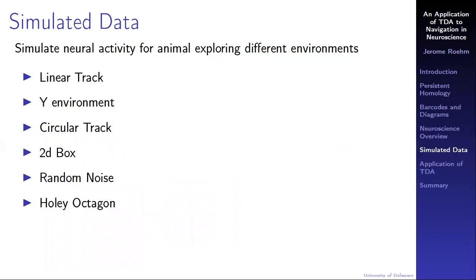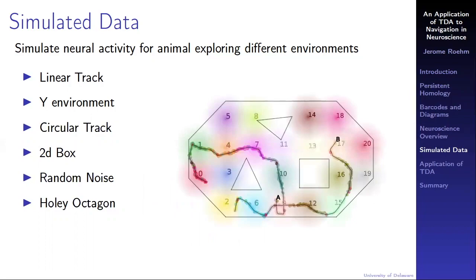Finally, as a way of testing my code, I simulated an animal exploring an environment I call the holy octagon. Incidentally, a great band name, but I digress. Notice here that the number of place fields and corresponding place cells has increased to about 20. Also, there are two runs shown. In order to get a more robust data set to analyze, I scaled up each environment accordingly.